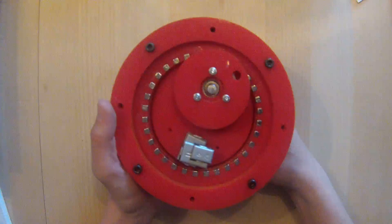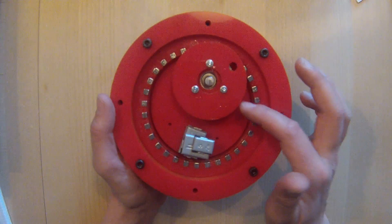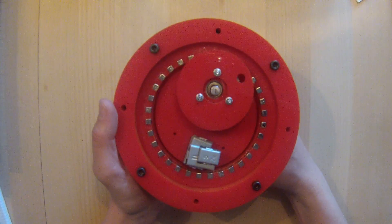There are 32 magnets in the outer large circle and 16 in the small circle.